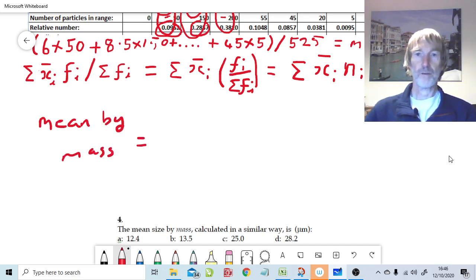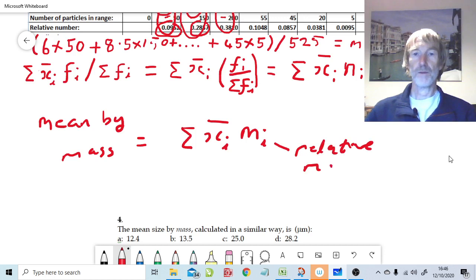Mean by mass is again going to be equal to our midpoints, the six, the eight and a half and all the rest of it, times by the relative mass from each of the increments. So we've got that for relative number, this for relative mass. So that's really question three and question four.